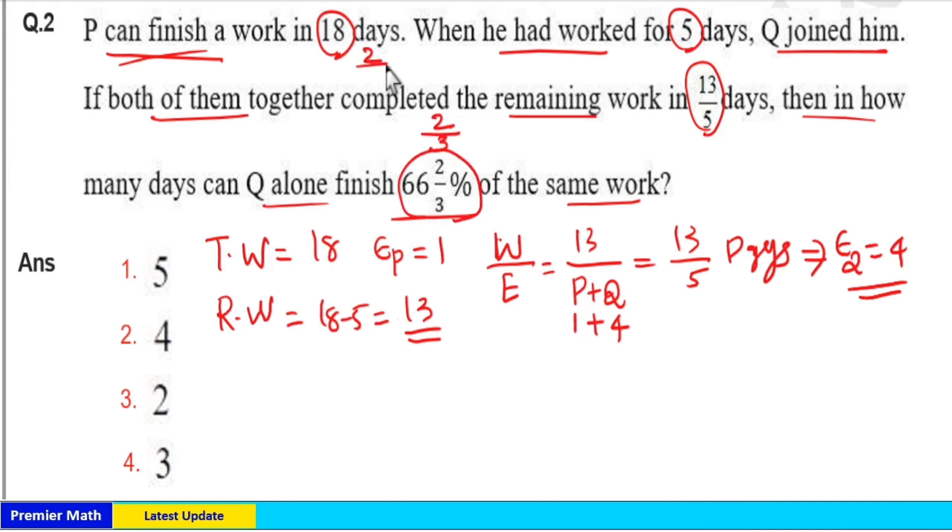Now 2 by 3 of the total work means 2 by 3 of 18, which is equal to 12 units. Efficiency of Q as 4 units means in 1 day 4 units of work is completed. So this 12 units, that is 2 by 3 of work, completed in 3 days.